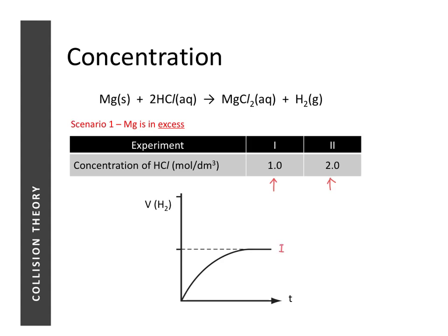The graph shown is obtained for experiment one. Before sketching the graph for experiment two, there are three key points to note. The first is the gradient at t equals zero, called the initial rate. The second is the volume of gas produced after the reaction has stopped, representing the maximum volume of hydrogen. The third is the time at which the reaction was complete.